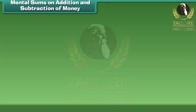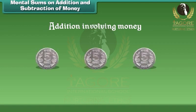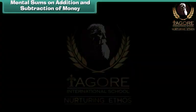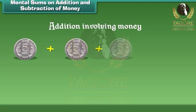Now let us learn about addition involving money. If I have three 5 rupee coins, can you tell me the total rupees I have? Add 5 plus 5 plus 5, which is equal to 15 rupees.